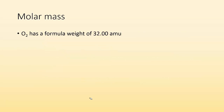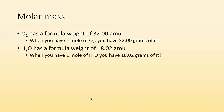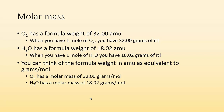O2 has a formula weight of 32.00 atomic mass units. So if I had one mole of O2, then I have 32.00 grams of it. If I had H2O, its formula weight is 18.02 atomic mass units. When I have a mole of water, I have 18.02 grams of it. You can think of the formula weight in AMU as equivalent to grams per mole — so O2 has a molar mass of 32.00 g/mol and H2O has a molar mass of 18.02 g/mol.